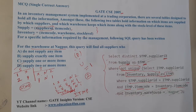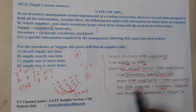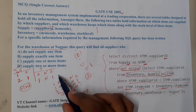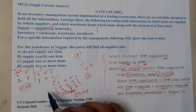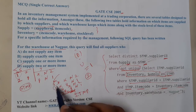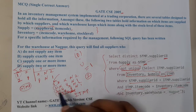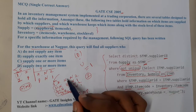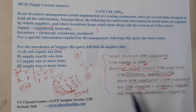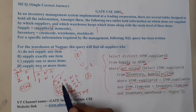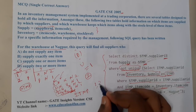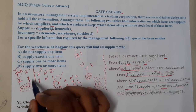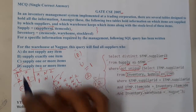Now we check where stmp dot supplier ID equals itmp dot supplier ID — so one equals one, one equals one, two equals two, two equals two — all rows match. Then we check that itmp dot item code matches: X matches X and Y matches Y. So we get supplier ID one and supplier ID two as results. But since these two are unique, they will not be printed by NOT UNIQUE. Only if we add one more entry — say supplier one with item X again — would we get a duplicate and it would appear in the output.